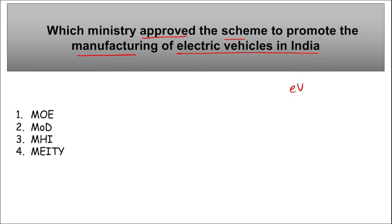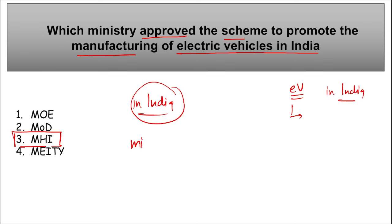The Ministry of Heavy Industries approved a new EV scheme to promote the manufacturing of electric passenger cars in India. Under this scheme, automobile companies must set up manufacturing plants with a minimum investment of ₹4,150 crore. Foreign automobile companies will be allowed to import up to 8,000 EVs per year at a reduced import duty of 15% for five years. The imported EVs must have a minimum CIF (Cost, Insurance, and Freight) price of $35,000.